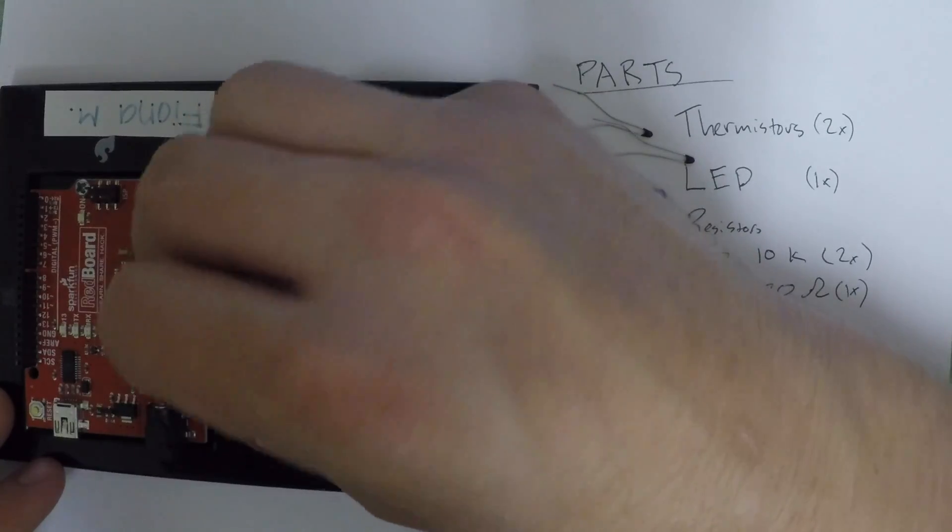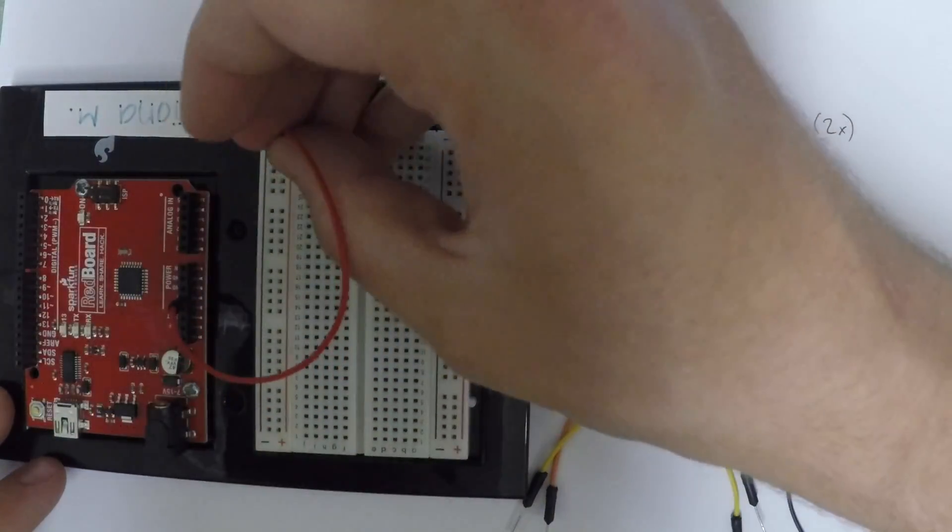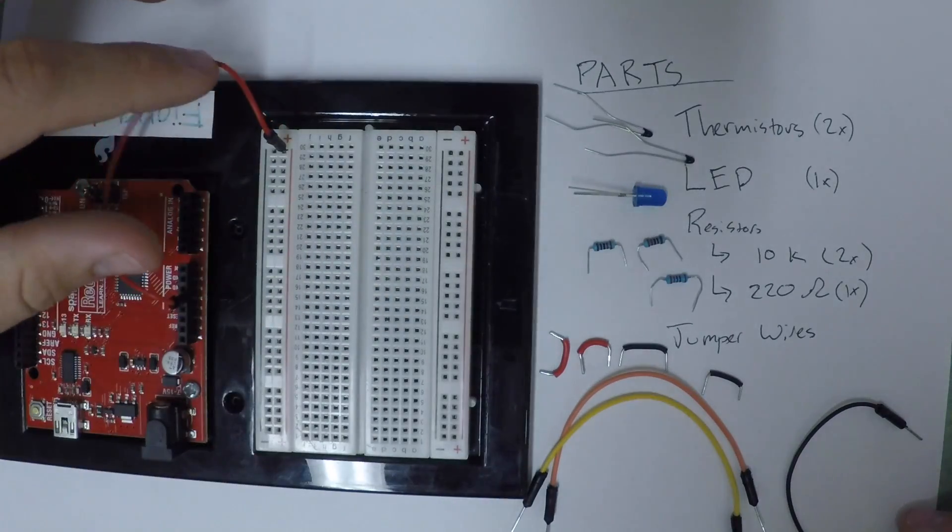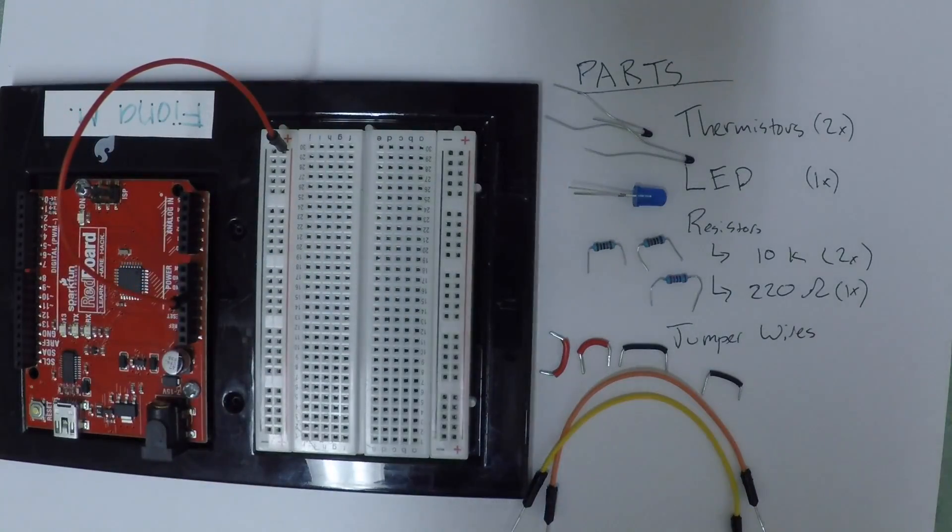So to jump right in we're going to connect 5 volts from Arduino to the positive rail of the breadboard, and then we're going to connect ground from Arduino to the negative rail of the breadboard.